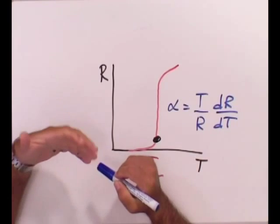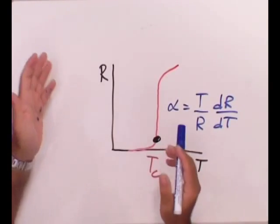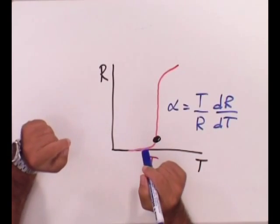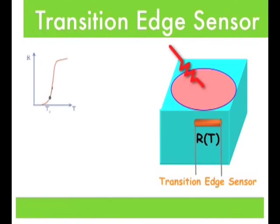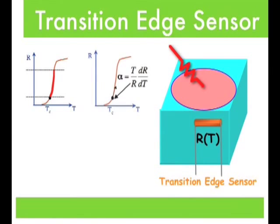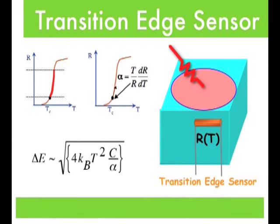The energy resolution we can obtain from these detectors is delta E, which is the capability of the system to discriminate between two closely lying energies coming from radiation. This is proportional to the square root of the thermal energy of the system, its heat capacitance, and this resistance-temperature parameter.